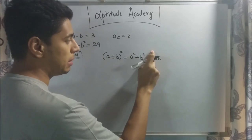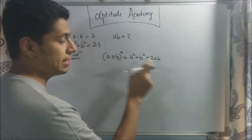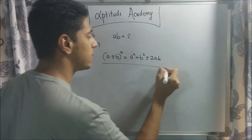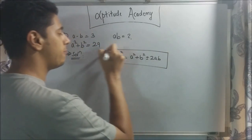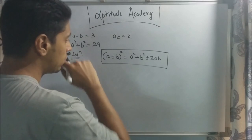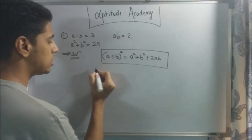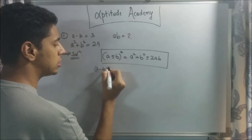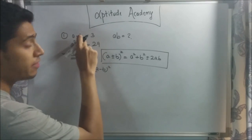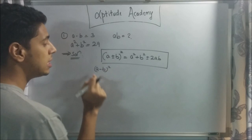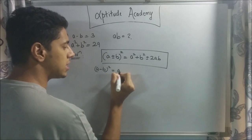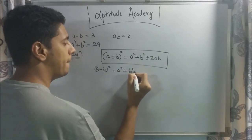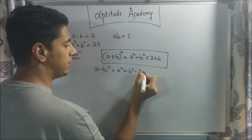If it's plus, here it becomes plus; if it's minus, here it becomes minus. This is one of the standard formulas you need to memorize. For this problem we use (a-b)² since they've given us a-b. So, (a-b)² = a² + b² - 2ab. Minus here, so minus here.